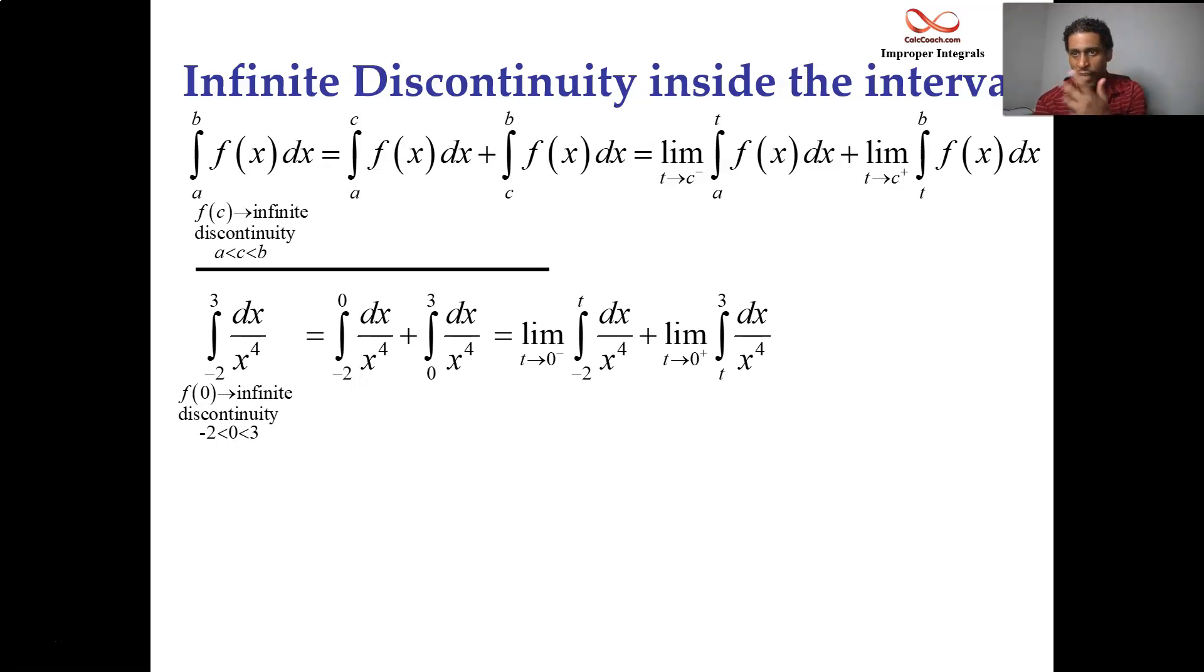Antiderivative, you know, it's just x to the negative 4. So that's x to the negative 3 over negative 3. When rewritten, though, it's better to write it like this, negative 1 over 3x cubed.